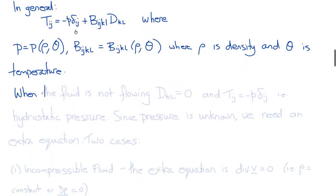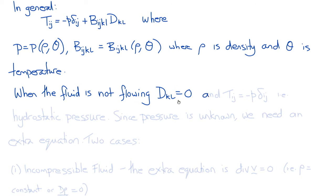Why did we separate out the hydrostatic pressure p? That's because when a fluid is not flowing, D_kl — the rate of deformation — is equal to zero. But there can still be stress in a non-flowing fluid, and that stress is the hydrostatic pressure minus p. Therefore, the stress tensor in a fluid that isn't flowing would be minus p on the diagonals, or T_ij equals minus p delta_ij.